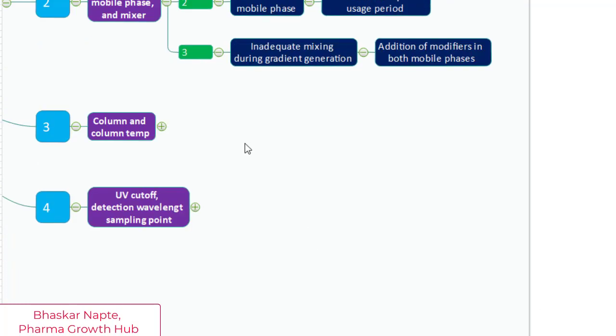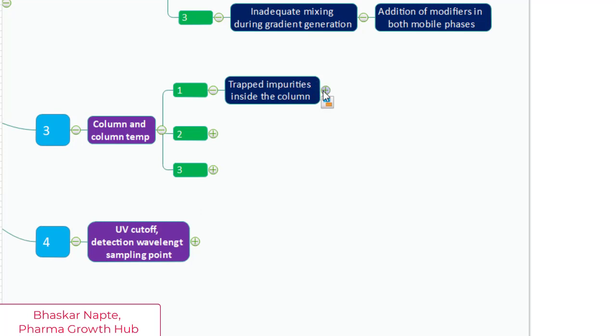Let's talk about point number three: the column and column temperature. The first one is trapped impurities inside the column. Column-related problems can also cause baseline fluctuations. Impurities from samples or even mobile phase can get trapped inside the column or at the column frit and eventually leach out causing ghost peaks or negative peaks or a wandering baseline or drift in the baseline. These symptoms can occur in addition to poor peak shape.